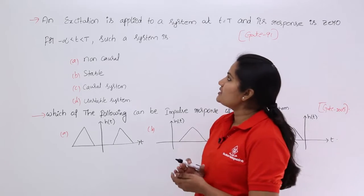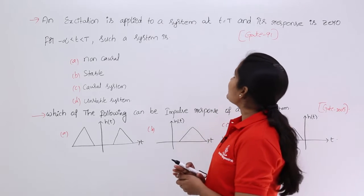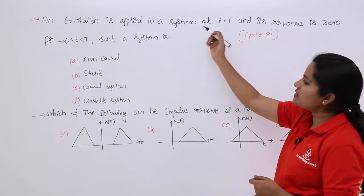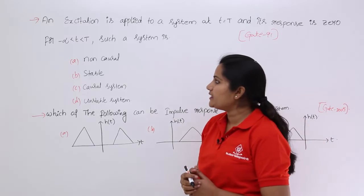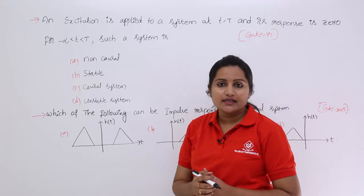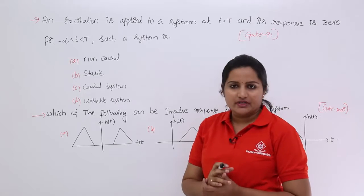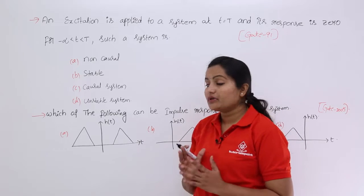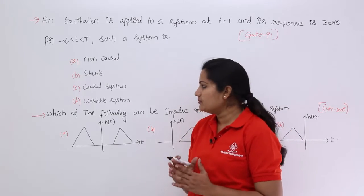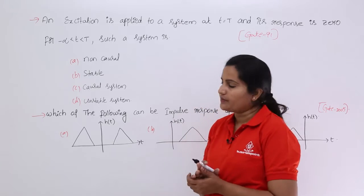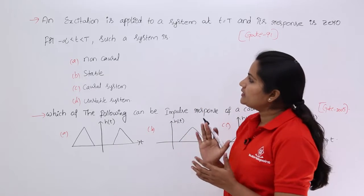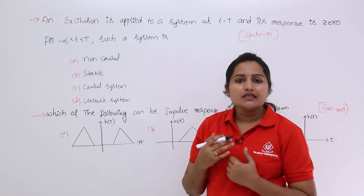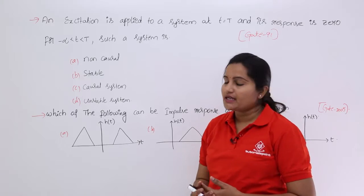An excitation is applied to a system at t equal to t and its response is 0 for minus infinity less than t. Such a system is — non-causal system, stable system, causal system, or unstable system — we need to say. Here they have given the excitation, that means input is applied at t equal to t, meaning our present time is equal to t.